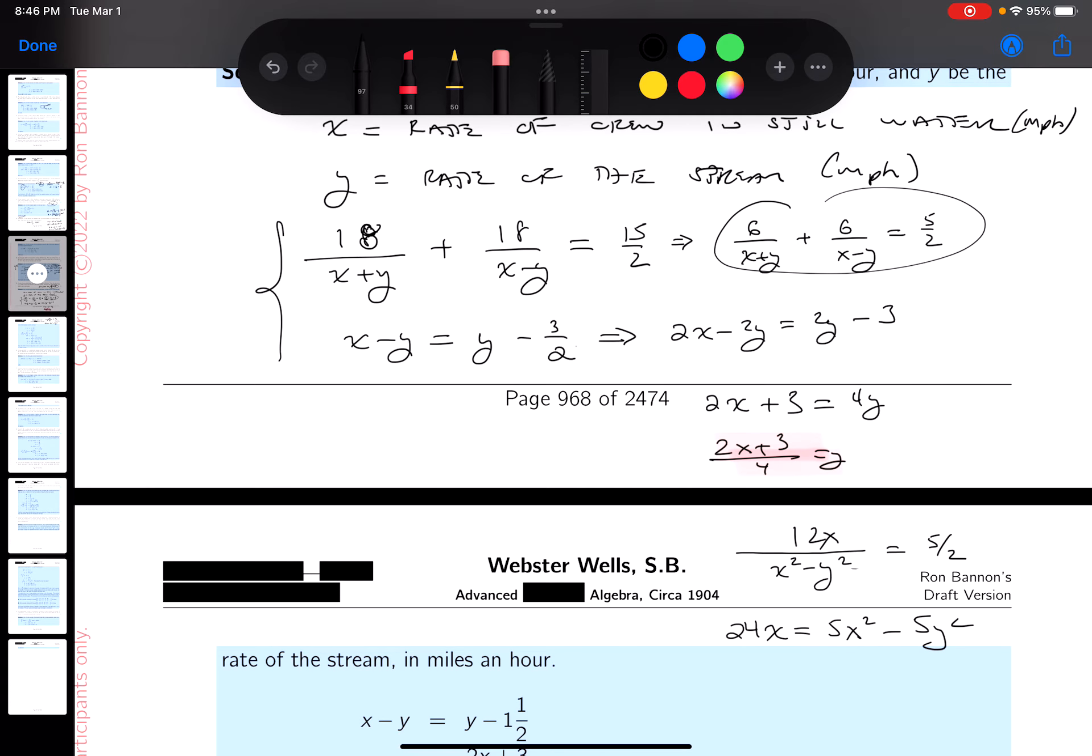Now I gotta take this Y and plug it in here. What do you get: 24X equals 5X squared minus 5 times (2X plus 3 over 4) squared.